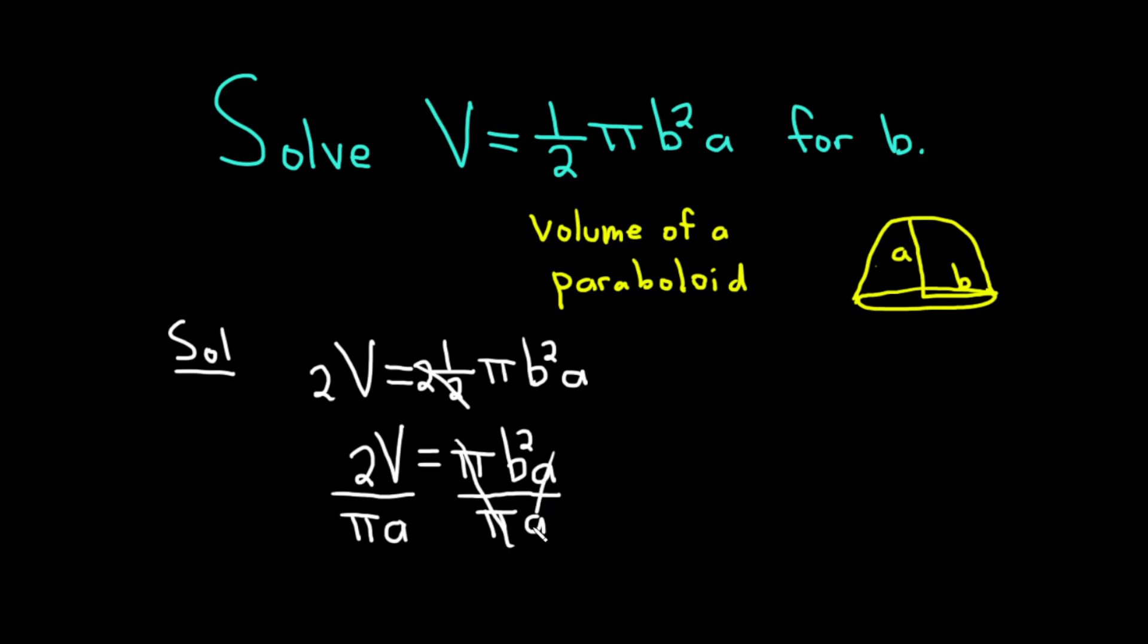So the π's cancel, the a's cancel. So we're left with b squared on the left. And that's equal to 2V over π a.